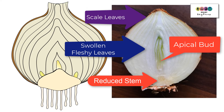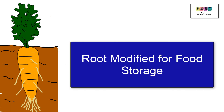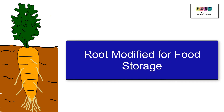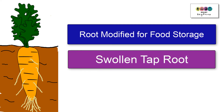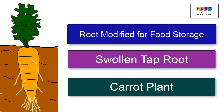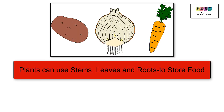Now let's look at an example of a root modified for food storage. In certain plants the tap root will swell up with food — this is where the food is stored. For example, in the carrot plant, the part of the plant you eat — the actual carrot — is the tap root that has swelled up with lots of food.